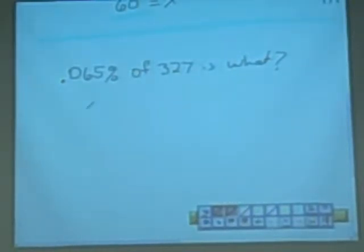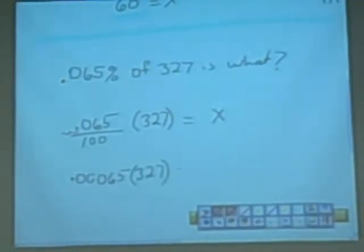So again, we'll make this into, whatever we have in the numerator, that's what we have for our percentage. That's what we put in the numerator. 0.065 over 100 times, we'll just use parentheses, 327 is equal to what value? So when we divide 100 into 0.065, what happens is we get that decimal point moves over two places. So now we get 0.0065 times 327 equals to x.